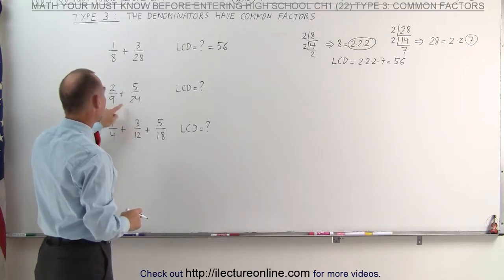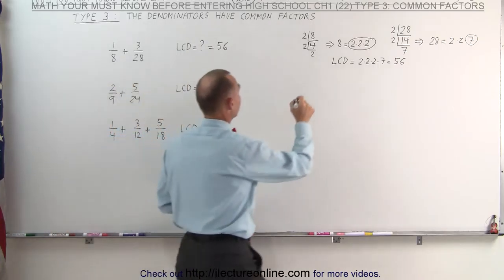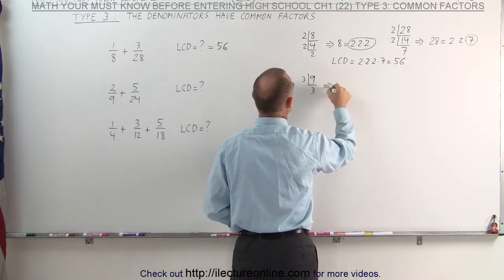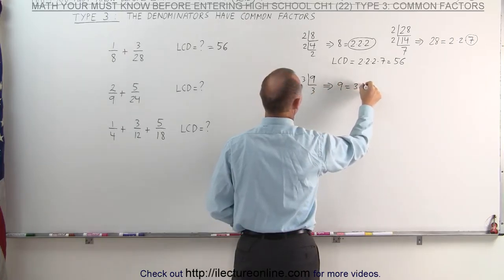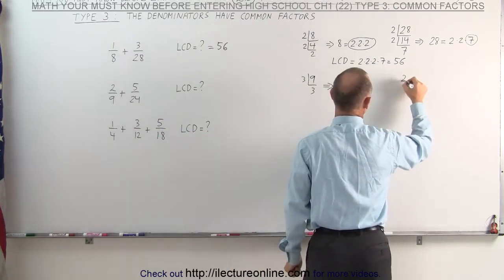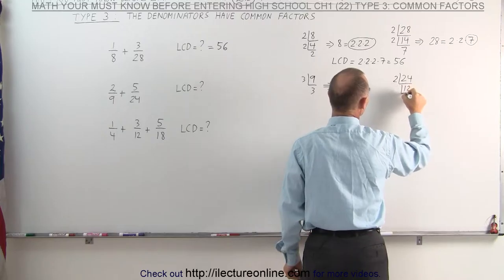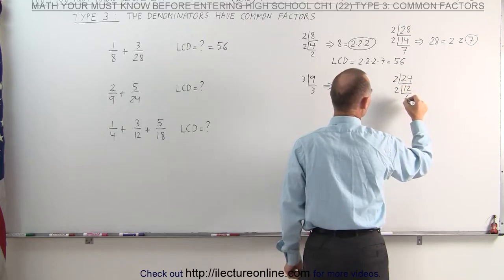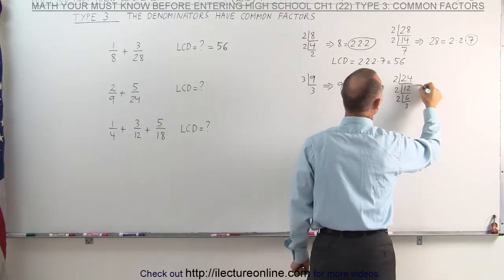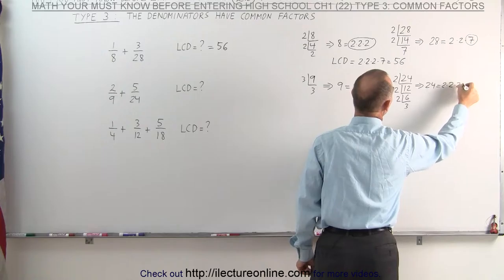Here we have 2 denominators, we're going to write those as a product of their factors as well. We take the number 9, we divide it by 3, which gives us 3, which means that 9 can be written as 3 times 3. Now we take the denominator 24. Since it's even, we can divide it by 2, which gives us 12, divided by 2, which gives us 6, divided by 2, which gives us 3. That means 24 can be written as 2 times 2 times 2 times 3.